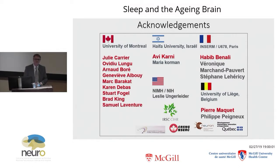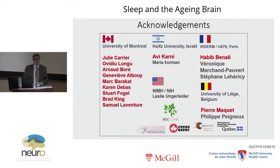A question was raised about when the spindle phase occurs within an eight-hour sleep cycle. Spindles occur mainly in stage two of sleep, and can also be found in stage three — so basically in the non-REM sleep phase. The sleep cycle goes from stage one through four and then back to REM sleep, with each cycle being about 90 minutes, repeating throughout the night. Subjects spend quite a bit of time in stages two and three during each cycle, which is when these spindle events are found.